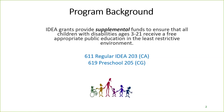To start off, let's talk a little bit about the program background with the IDEA budget and funds. The IDEA is actually a grant — an entitlement grant that provides supplemental funds to ensure that all children with disabilities ages 3 to 21 receive a free, appropriate public education in the least restrictive environment. That's what we call our FAPE. These funds come from a grant given from the state based on the 611 regular IDEA grant, and then we have what we call our 619 preschool grant.